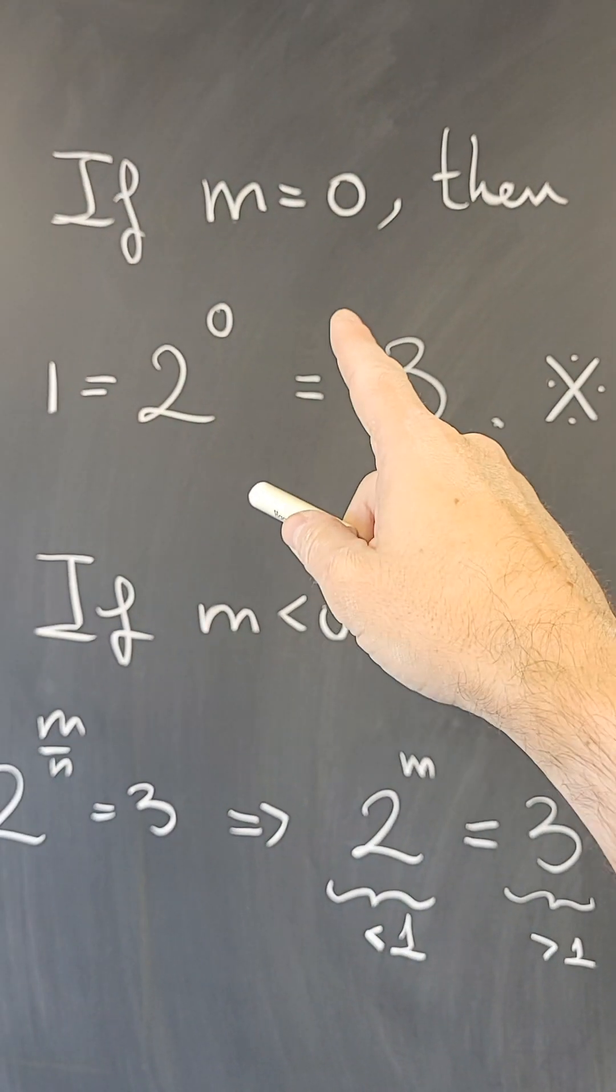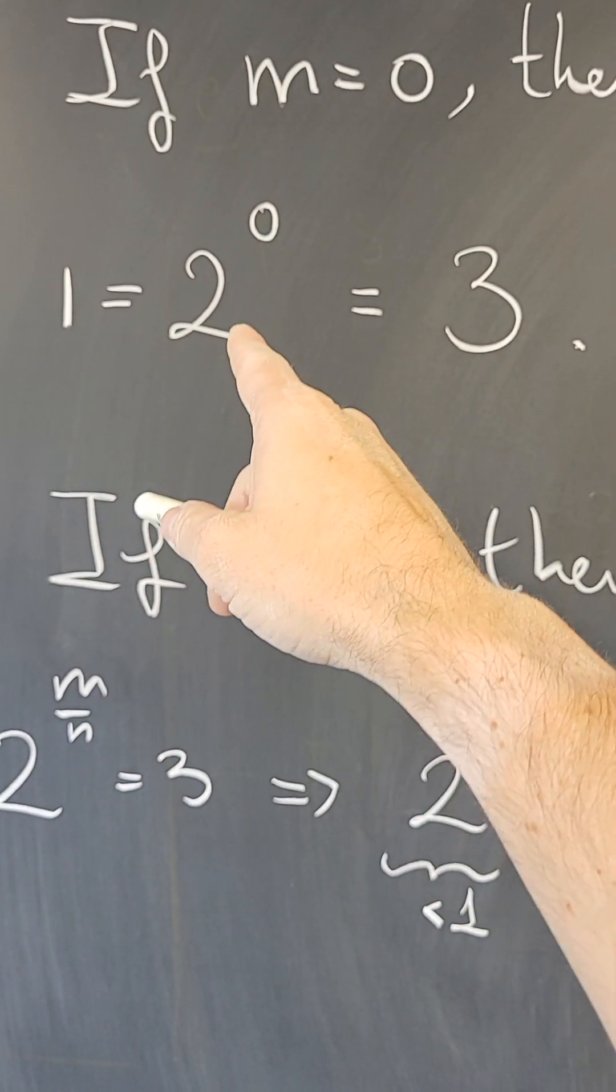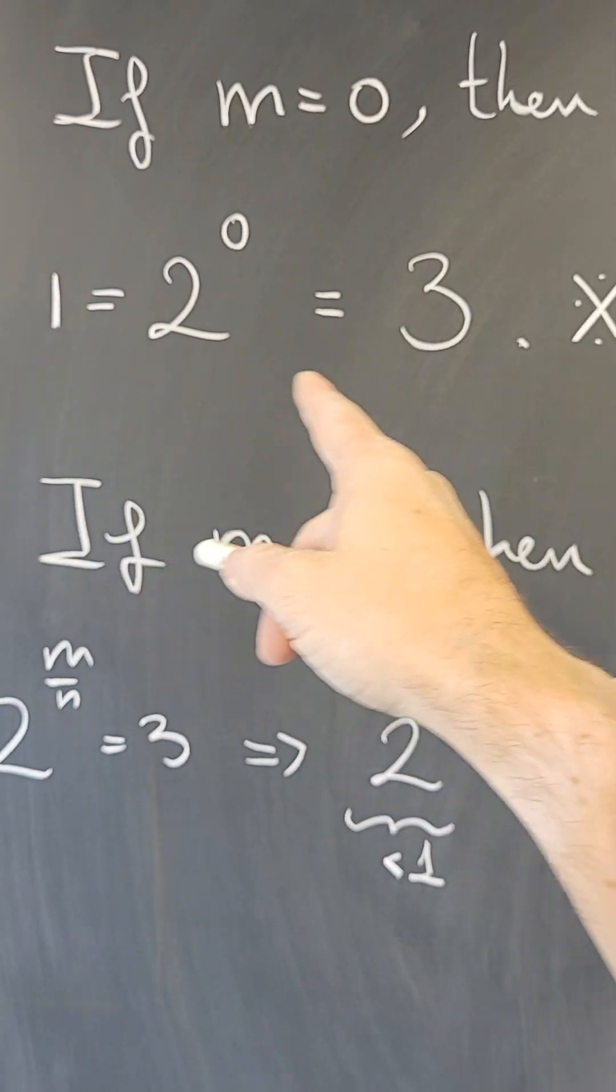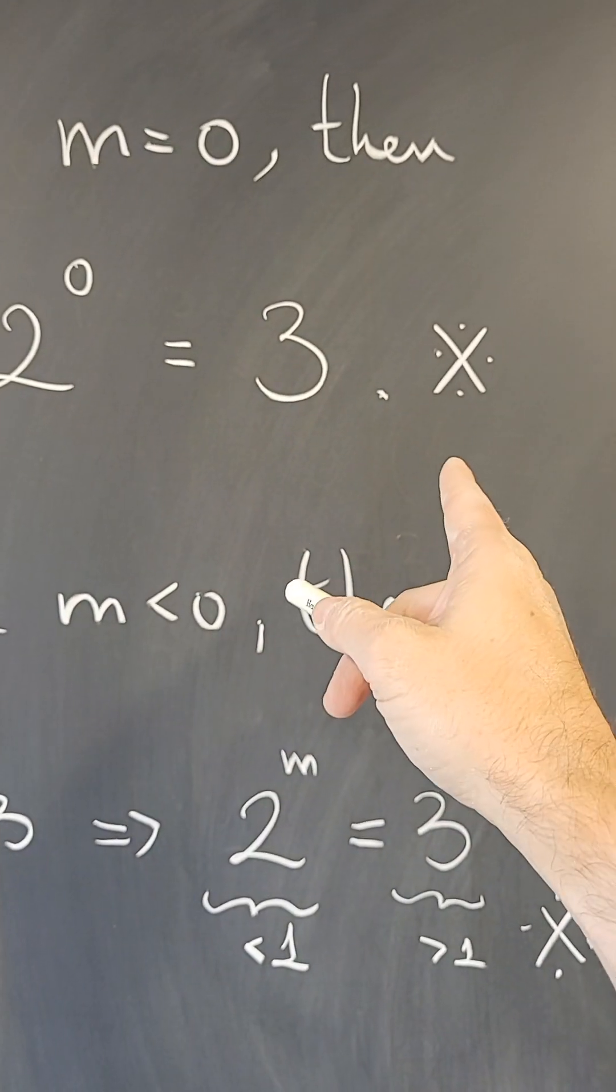If m = 0, then we get 2^0 = 3, but 2^0 = 1, and 1 is definitely not 3. Contradiction.